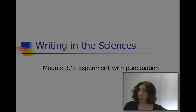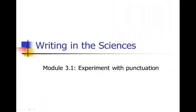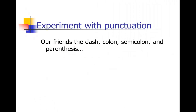For this first module, I'm going to talk about experimenting with punctuation. This is not a course in grammar or punctuation, but there are a couple of key punctuation marks I want to draw your attention to: the dash, the colon, the semicolon, and the parentheses. You may not have used these recently because you may have been told that it's improper to use them in scientific writing, or you just picked that up along the way. They may seem a little too exotic or informal.